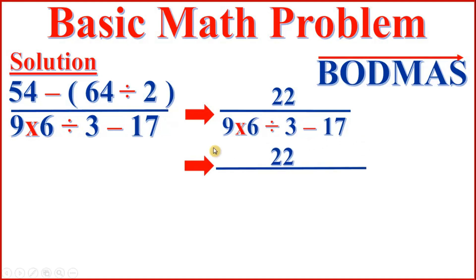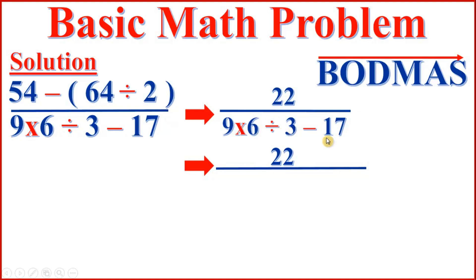Now we can work on the denominator: 9 times 6 divided by 3 minus 17. According to BODMAS, after bracket and orders, we do division first. So we divide 6 by 3.